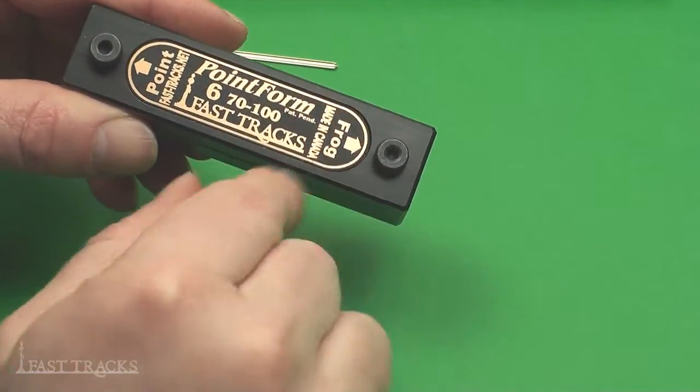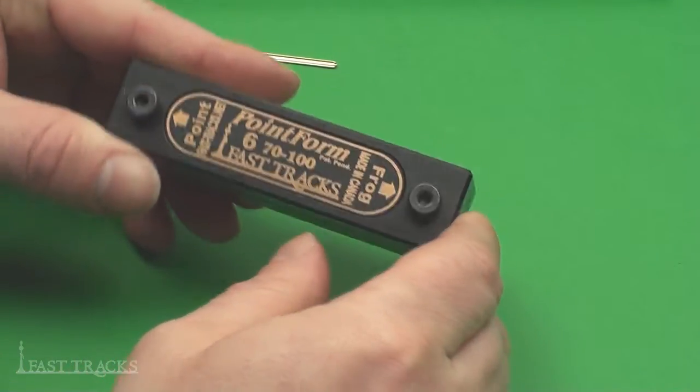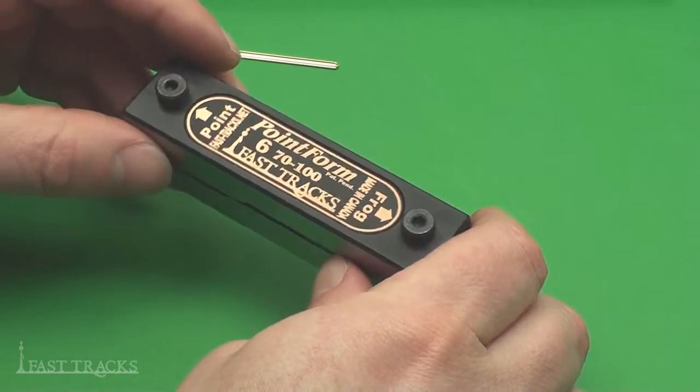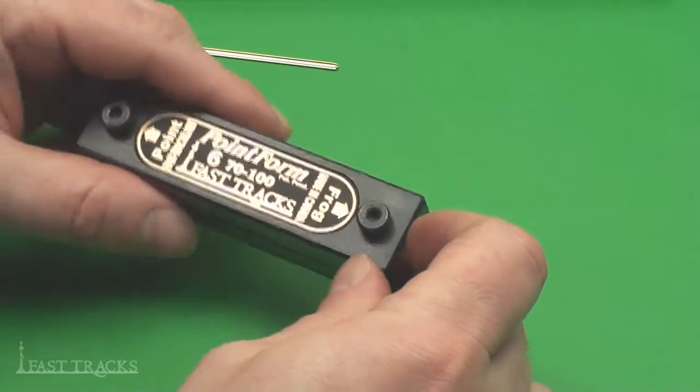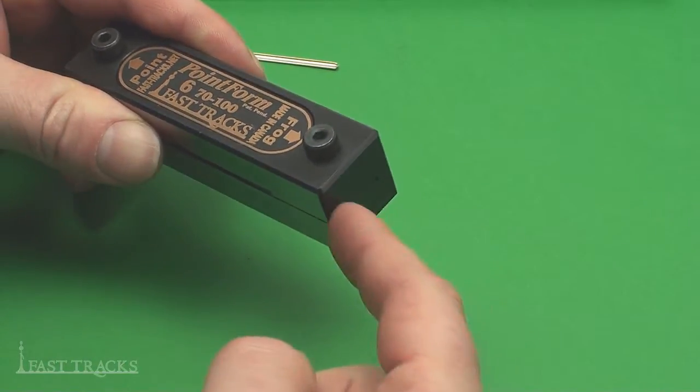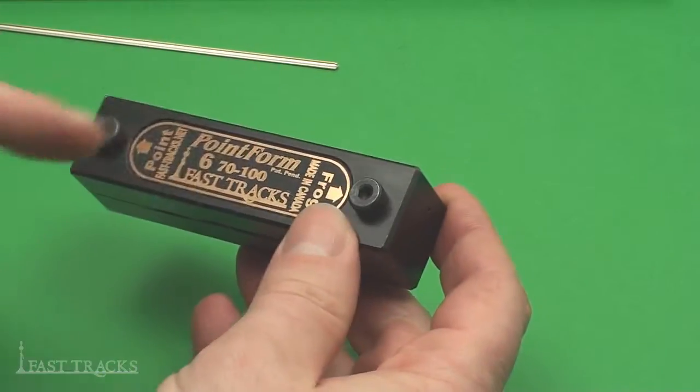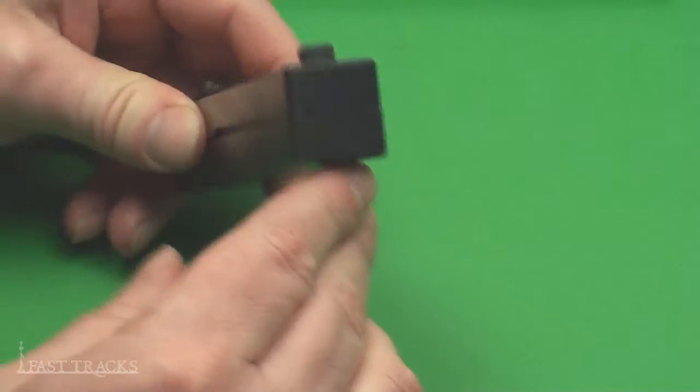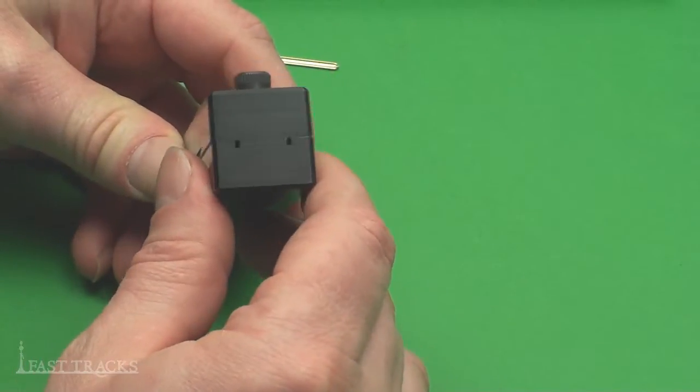Marked on the tool is the word frog on one end, on the right side if you're looking at it the right way up, and on the other end is point. To make frog points, we want to insert the rail on the end marked frog. Not this direction, but this direction. So this end of the tool is where we put the rail to make our frog points.